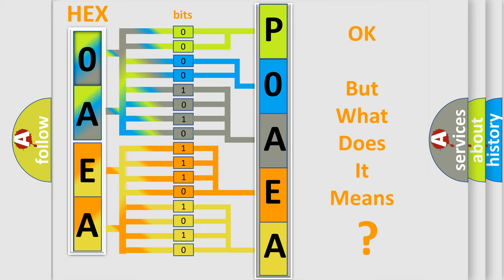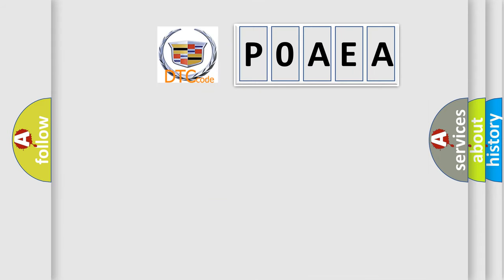The number itself does not make sense to us if we cannot assign information about what it actually expresses. So, what does the Diagnostic Trouble Code P0AEA interpret specifically for Cadillac car manufacturers?